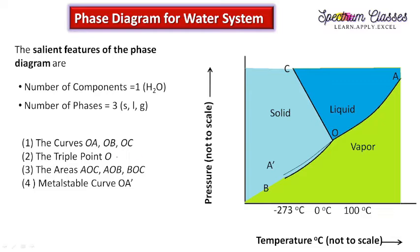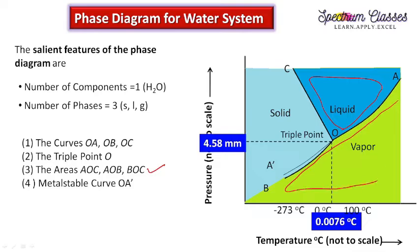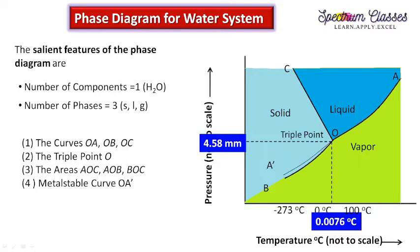The triple point O is where all three phases — solid, liquid, and gas — coexist together. It exists at 0.0076°C and 4.58 mmHg. The areas OAC, AOB, and BOC are regions where single phases exist. There is also the metastable curve shown by the thin line OA', which we will discuss shortly.